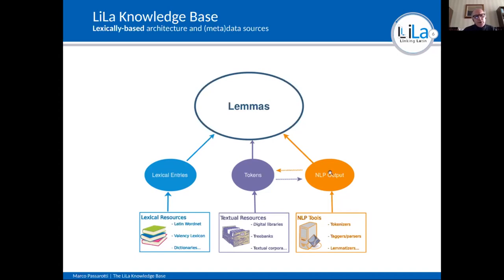Natural language processing tools process words and produce outputs. The output of some NLP tools are tokens — for instance, a tokenizer produces tokens that become the input of other NLP tools like a part-of-speech tagger. We link all of these distributed lexical resources, textual resources, and NLP tools, making them speak the same language by connecting them to a big collection of Latin lemmas. You can query all the tokens in distributed textual resources that are lemmatized under the same lemma.